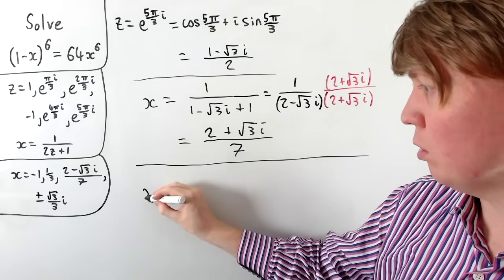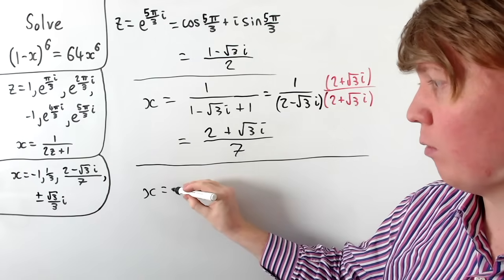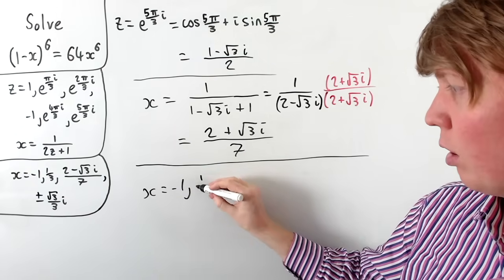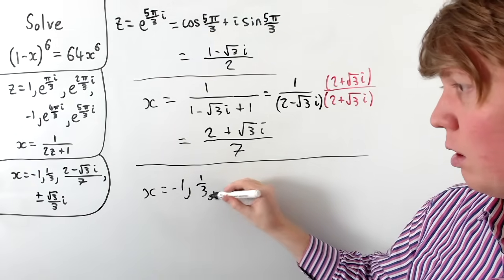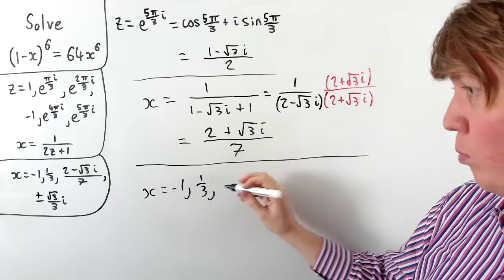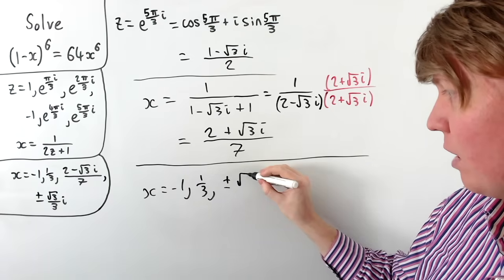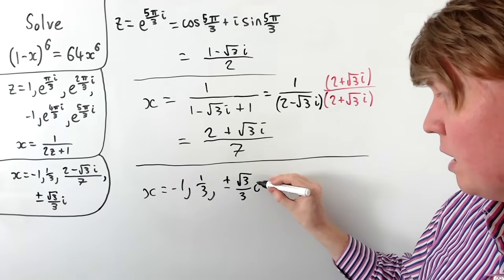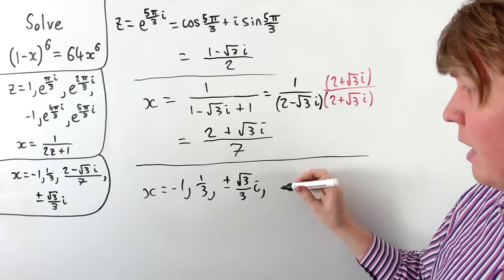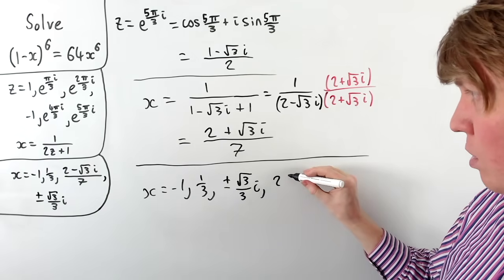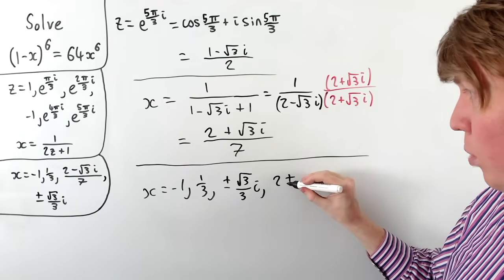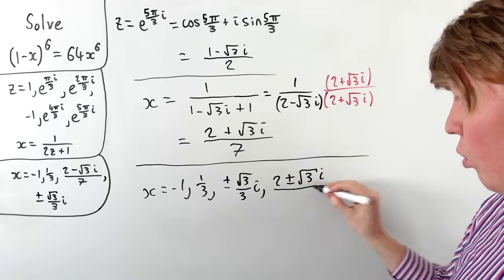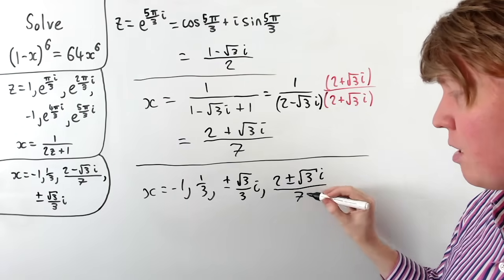So these are all six solutions to our original equation: the real solutions are x equals negative 1 and x equals 1/3; the pure imaginary solutions are x equals plus or minus (√3/3) i; and the complex solutions are x equals (2 plus or minus √3 i)/7.